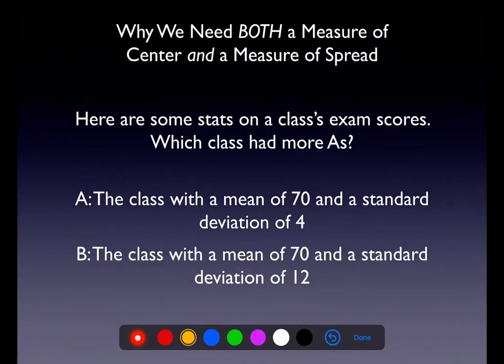Now let's talk about why we need both a measure of center and a measure of spread. Imagine two classes with exam scores. Class A had a mean of 70 and a standard deviation of 4; Class B had a mean of 70 and a standard deviation of 12. Before I show the answer, pause and think: which class had more students earning an A?